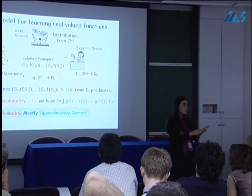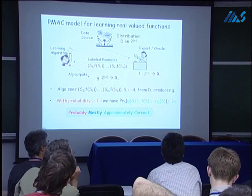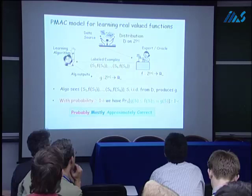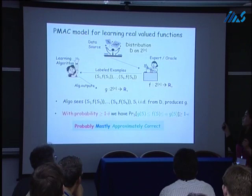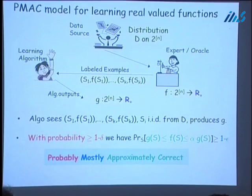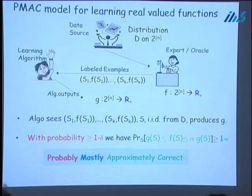Notice that when alpha is one, we recover the classic PAC model for learning Boolean functions. But since here we are trying to learn more complicated real-valued functions, really both alpha and epsilon measure how well we are doing. Even if the target function and underlying distribution are defined over an exponentially sized instance space, we want to use only a polynomial number of examples and polynomial time to output a function close to the target.